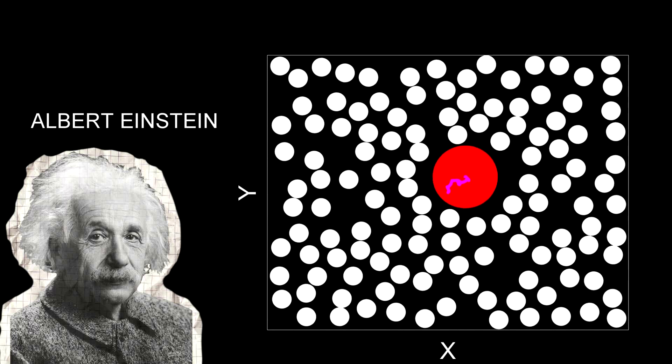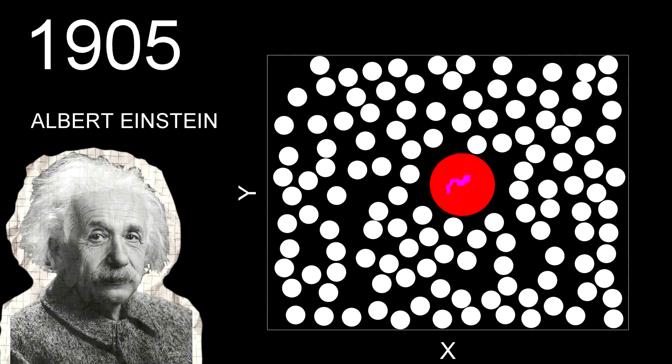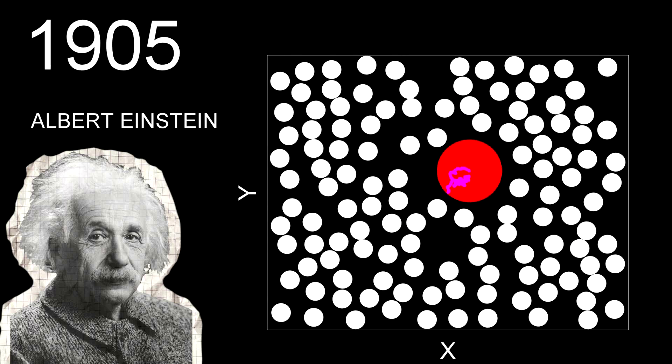However, the mathematical explanation for this mysterious movement came nearly 80 years later, in 1905, when Albert Einstein published a groundbreaking paper.